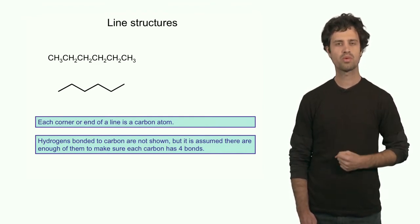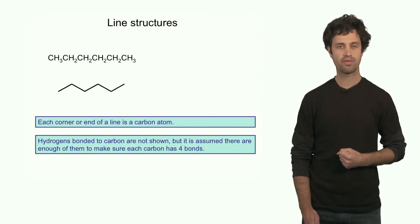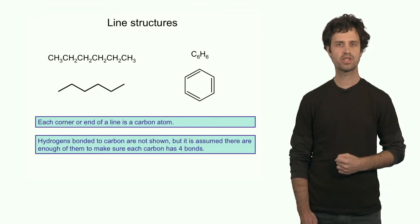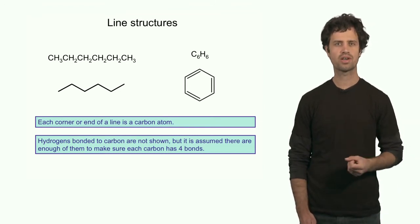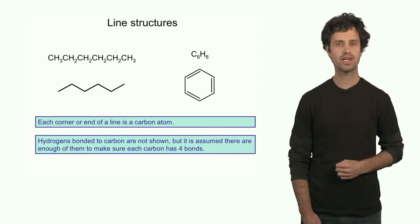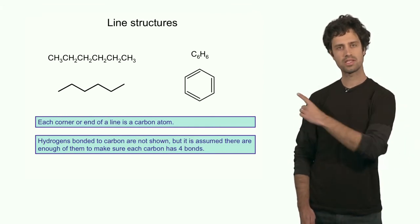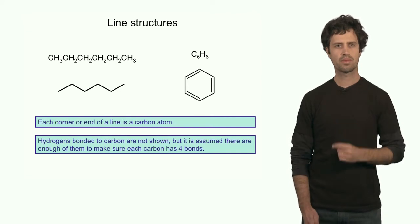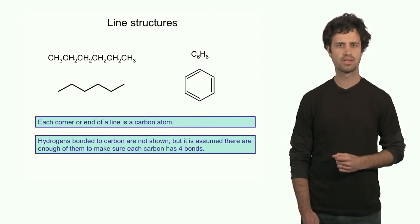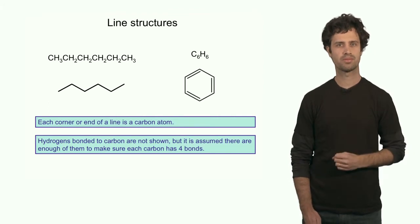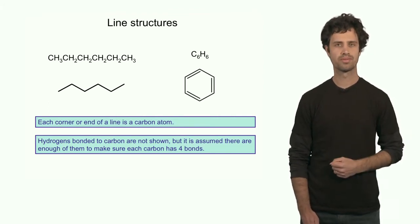An example where a condensed structural formula fails to represent a structure is benzene. Benzene is a ring structure, which is really hard to write in a condensed structural formula. However, the line structure is very clear. In this line structure, each corner is a carbon atom. Each carbon atom must have four bonds, which means each carbon atom here has one hydrogen atom to fulfill that rule.